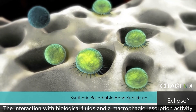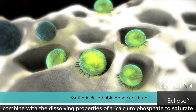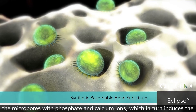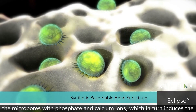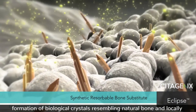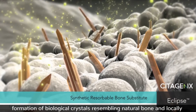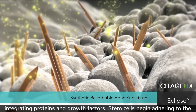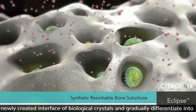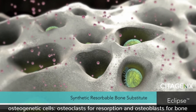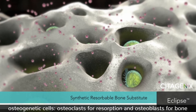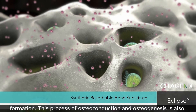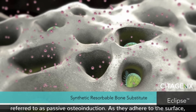The interaction with biological fluids and the macrophagic resorption activity combine with the dissolving properties of tricalcium phosphate to saturate the micropores with phosphate and calcium ions, which in turn induces the formation of biological crystals resembling natural bone and locally integrating proteins and growth factors. Stem cells begin adhering to the newly created interface of biological crystals and gradually differentiate into osteogenetic cells — osteoclasts for resorption and osteoblasts for bone formation. This process of osteoconduction and osteogenesis is also referred to as passive osteoinduction.